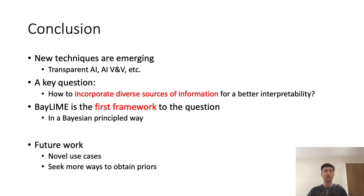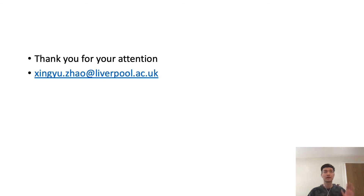To conclude, there are new techniques emerging to make AI and machine learning models more transparent and to better study their behavior. We believe the key question is how to incorporate diverse sources of information for better interpretability. BEI LIME is the first framework to address this question, combining diverse sources of information in a principled Bayesian way. Thank you for your attention — please feel free to drop me an email if you have any questions.